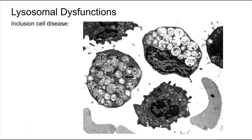Lysosomal storage diseases are caused by genetic defects that affect one or more of the lysosomal hydrolase enzymes. The defects result in the accumulation of undigested substrates in lysosomes, with severe pathological consequences, often in the nervous system. In most cases, there is a mutation in a structural gene that codes for an individual lysosomal hydrolase. The most severe form of lysosomal storage disease, however, is called inclusion cell disease.